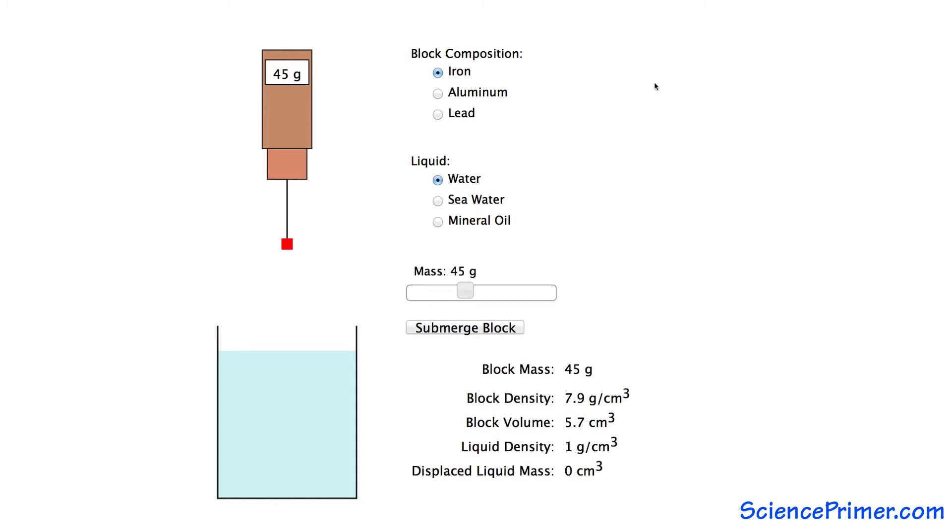This effect can be demonstrated using a hanging scale to measure the mass of an object in and out of a container of water. This iron block has a mass of 45 grams. When it is lowered into a container of water, its apparent mass goes down to 39.3 grams.